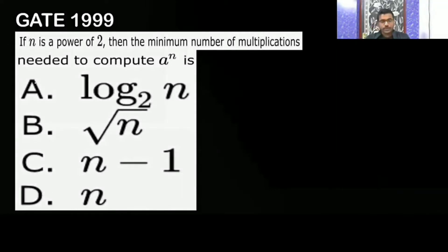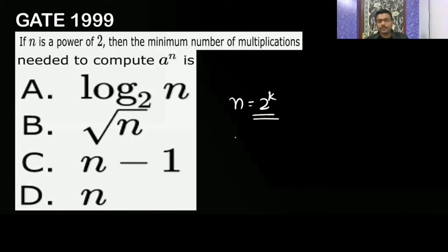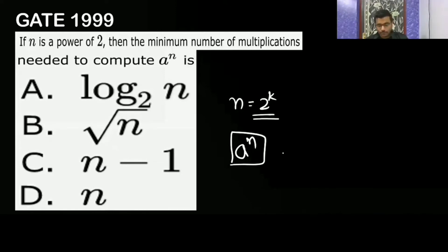The question states: if n is a power of 2, that is n equals 2 to the power k, what is the minimum number of multiplications needed to compute a to the power n? So n is always a power of 2, and we want to minimize the number of multiplications to compute a to the power n.